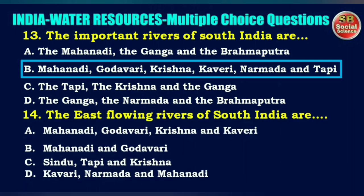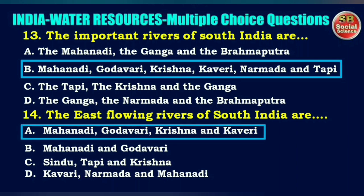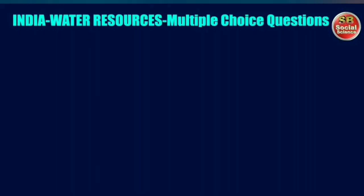Next question: the east flowing rivers of South India are — options are Mahanadi, Godavari, Krishna and Kaveri; Mahanadi and Godavari; Sindhu, Tapi and Krishna; or Kaveri, Narmada and Mahanadi. The right answer is option A: Mahanadi, Godavari, Krishna and Kaveri.